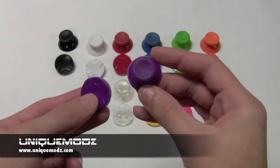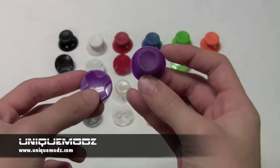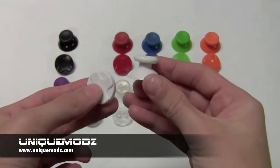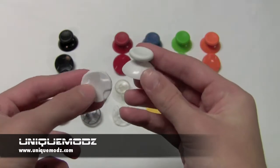So we have about 10 different colors available. You can mix and match any colors that you like. For example, if you like to have purple thumbsticks and clear d-pad, you can do that on our site with the two drop down boxes available.